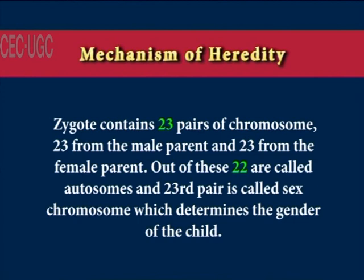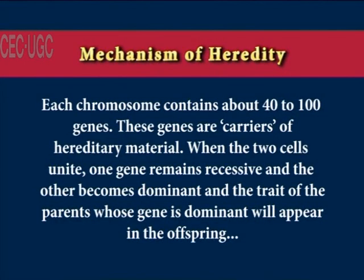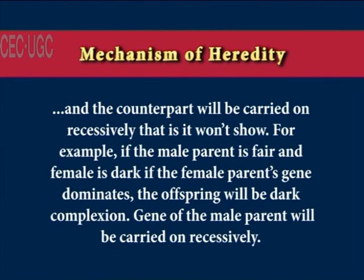The zygote contains 23 pairs of chromosomes — 23 from the male parent and 23 from the female parent. Of these, 22 are called autosomes and the 23rd pair is called the sex chromosome, which determines the gender of the child. Each autosome is a carrier of traits like color of the eye, complexion, hair, etc. Each chromosome contains about 4,200 genes, which are the carriers of hereditary material. When two cells unite, one gene remains recessive and the other becomes dominant, and the trait of the parent whose gene is dominant will appear in the offspring, while the counterpart is carried recessively and won't show.